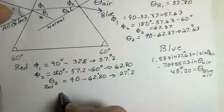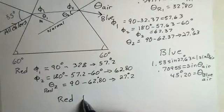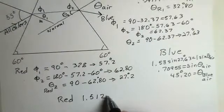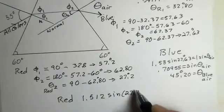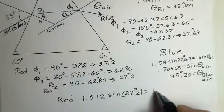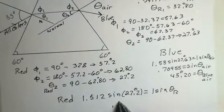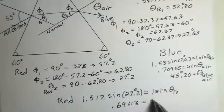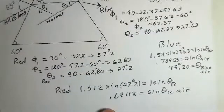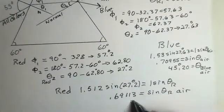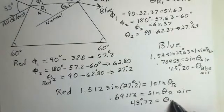Now, let's do the red refraction into the air. For the red situation, the index refraction is 1.512. And we had 27.2 degrees equals 1 sine of theta red into the air. And it came up 0.69113 equals the sine theta red in the air. And taking inverse sine of both of those, I came up with 43.72 degrees for the theta in the air for the red light.